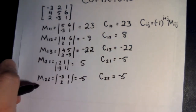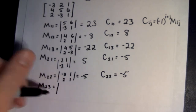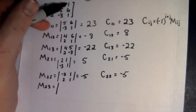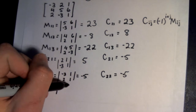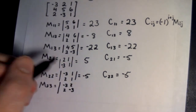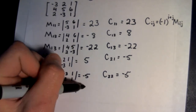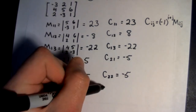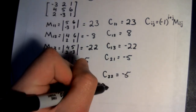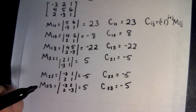Now we look at the minor M23. We get rid of the second row and third column, giving us negative 3, 2, 2, negative 3. The determinant is 9 minus 4, which is 5. Since 2 plus 3 is 5, negative 1 to the 5th is negative 1. So the cofactor C23 is negative 1 times 5, which is negative 5.